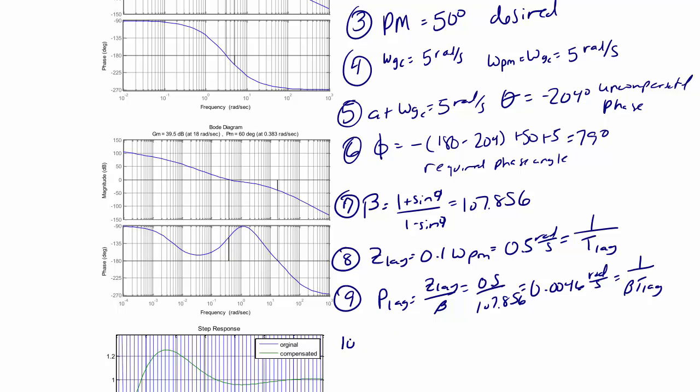Step 10 is to find alpha. Alpha is equal to 1 over beta, so alpha is equal to 0.009272.